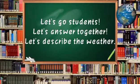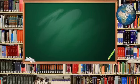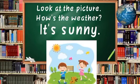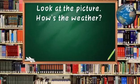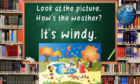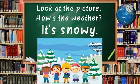Let's go, students. Let's answer together. Let's describe the weather. Are you ready? Okay, let's go. Number one — look at the picture. How's the weather? Very good, it's sunny. Number two — look at the picture. How's the weather? You are right, it's windy. Good job. Number three — how's the weather? Look at the picture first. Correct, it's snowy. Very good.